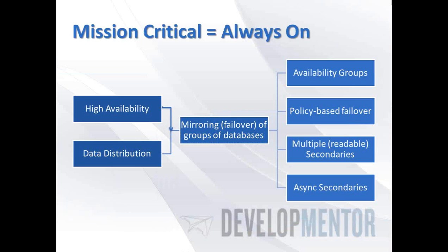The next thing to talk about is the mission critical, which I call 'always on' — it's High Availability Disaster Recovery, or HADR Always On. This is essentially a better mirroring: you have the ability to mirror in groups, set policy-based failover criteria, and now secondaries can be readable or asynchronous. It's a really highly requested feature. I'm more of a database developer than a hardcore DBA, but my DBA friends are super interested in this.